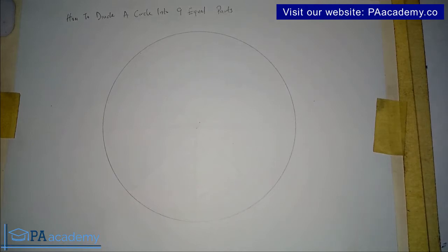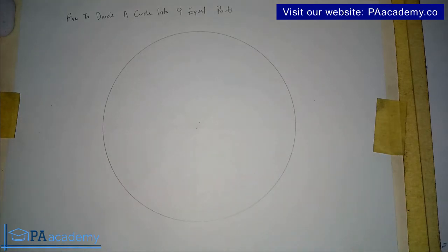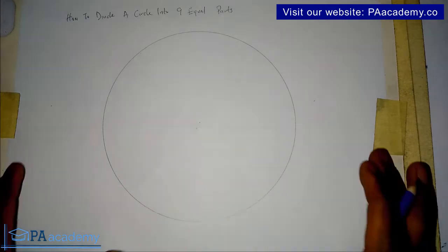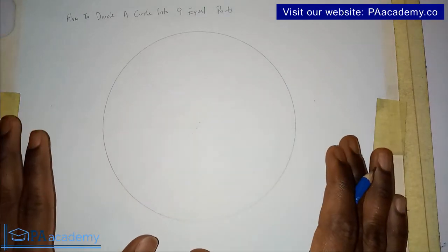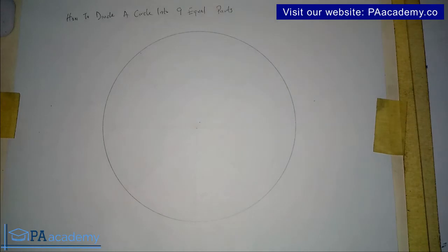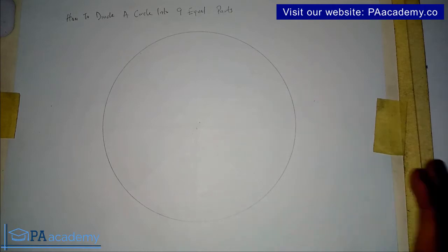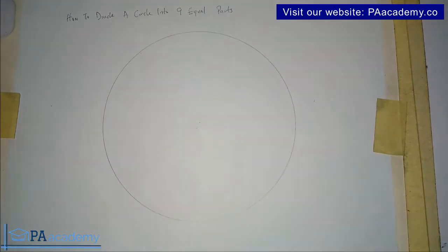Now let's get into this video. Before we start, it's important to know that regardless of the radius of the circle that you are asked to divide into nine equal parts, the steps are still the same. Whether you are given a radius of 50 millimeters, 10 millimeters, or whatever millimeter radius or diameter, the steps are still the same.